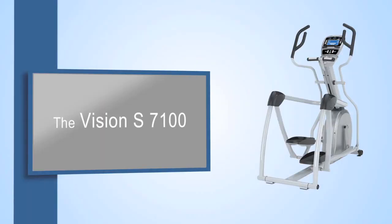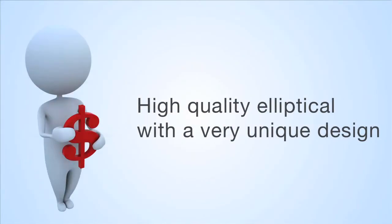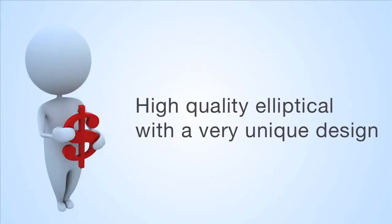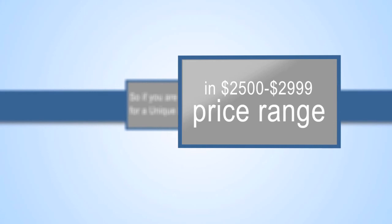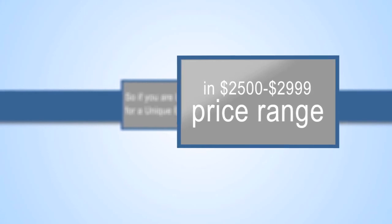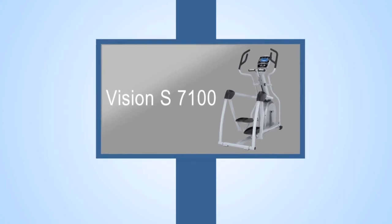The main reason the Vision S7100 ranked like this was because it's a high-quality elliptical with a very unique design. So, if you're looking for a unique elliptical in the $2,500 to $2,999 price range, we suggest the Vision S7100 this year.